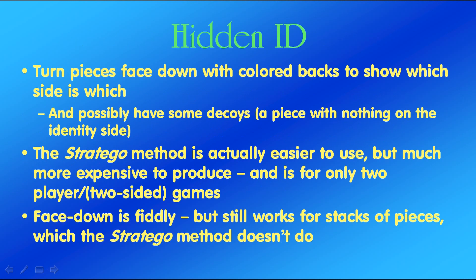Hidden identity — that is, in this case, turning pieces face down with colored backs to show which side is which. And possibly you can have some decoys, which is to say a piece with nothing on the identity side. The Stratego method is actually easier to use but much more expensive to produce and is only for two-player or two-sided games. Face down is fiddly but it still works for stacks of pieces or for games with more than two players, which Stratego doesn't do.